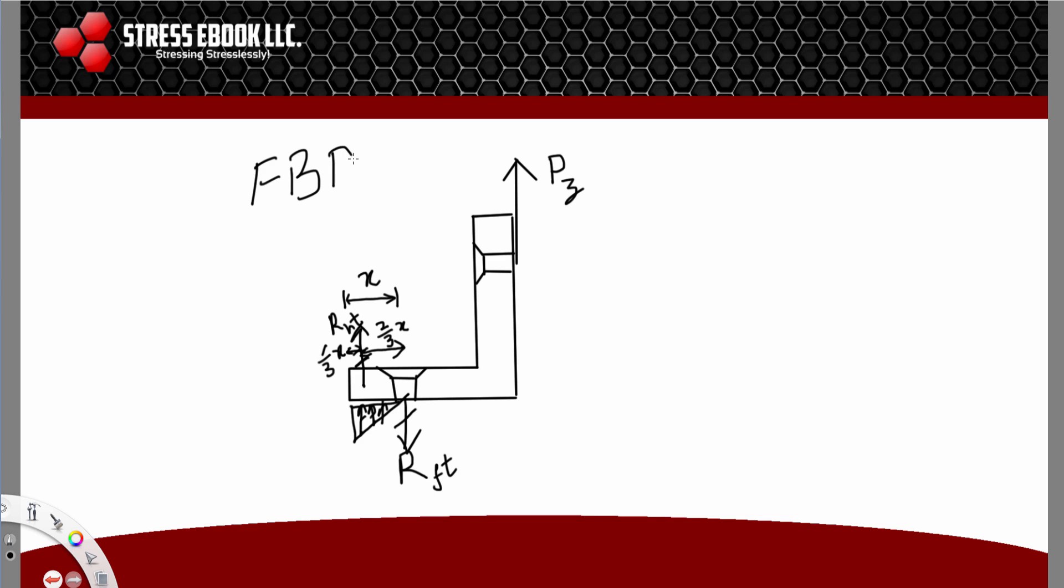There's a load applied and you have an opposite reaction load. You also have a prying load due to this overturning moment which is also a reaction. This reaction goes up because this has to equal the summation of this and this. We have a force balance.